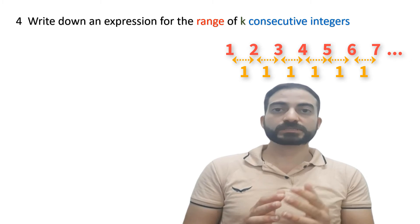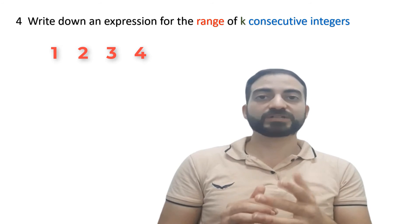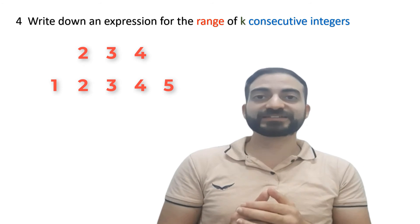For example, the sequence 1, 2, 3, 4 are consecutive integers. Another example: 1, 2, 3, 4, 5 are consecutive integers.